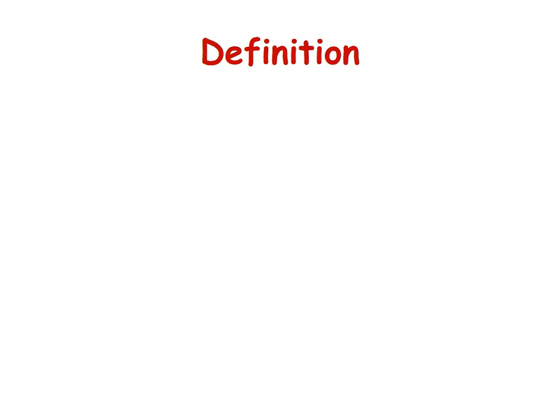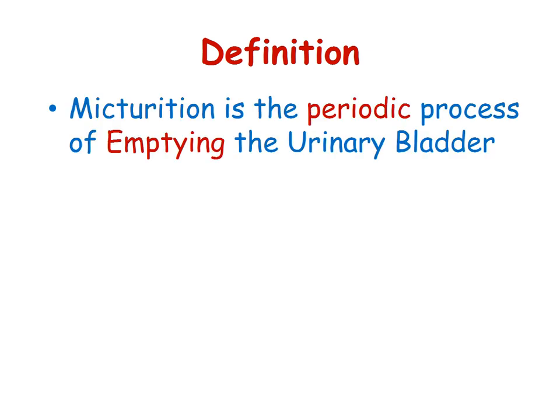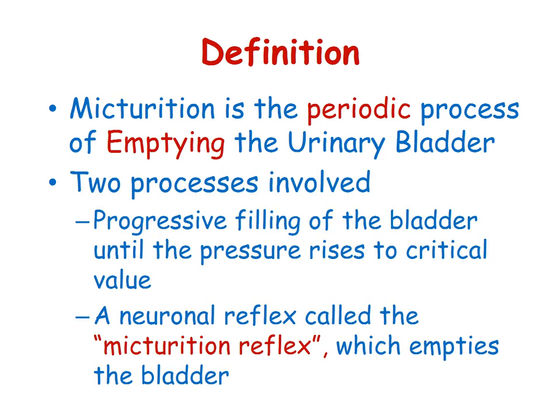Let us look at the definition. Micturition is the periodic process of emptying the urinary bladder, also called as voiding of urine. There are two processes involved: one is progressive filling of the bladder until the pressure rises to a critical value, followed by a neuronal reflex called the micturition reflex which empties the bladder.